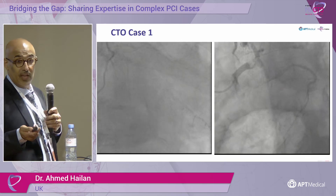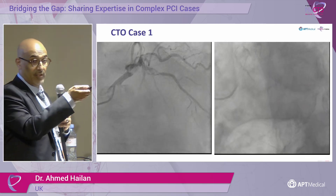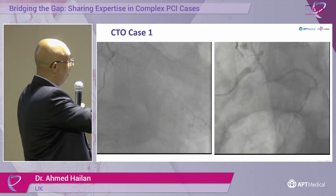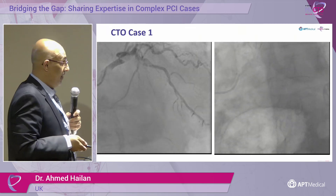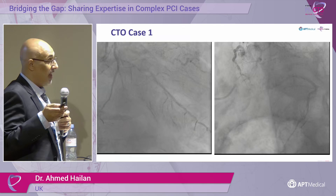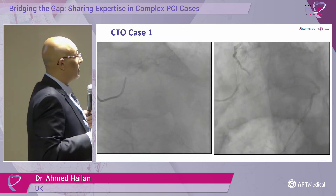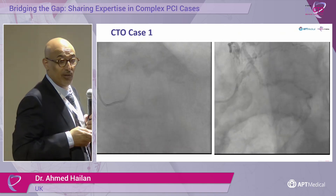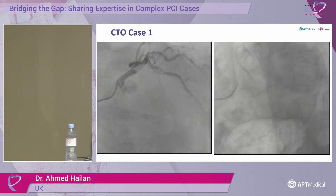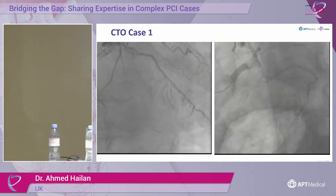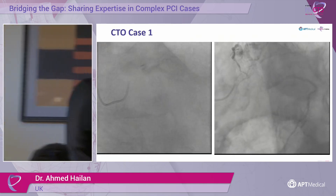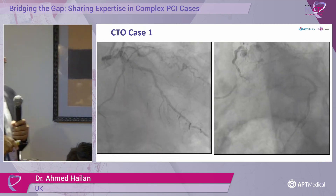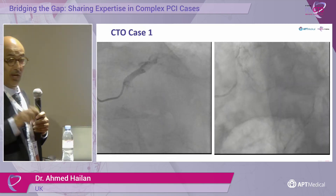If you use the SYNTAX score it would be favoring surgery over PCI because he's got good LV function, he's an elderly gentleman with terminal left main stem disease and further disease. That's what the heart team suggested - surgery. The surgeons were happy to take him, but you know surgeons - they can turn down anyone if they want to, they just need to scare them off with the risk.